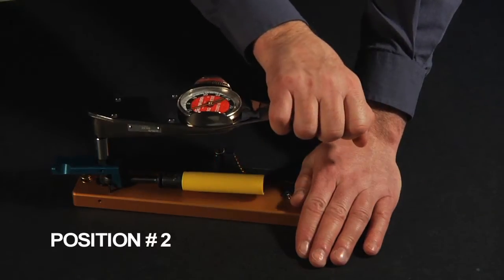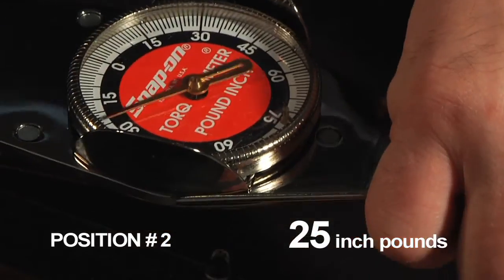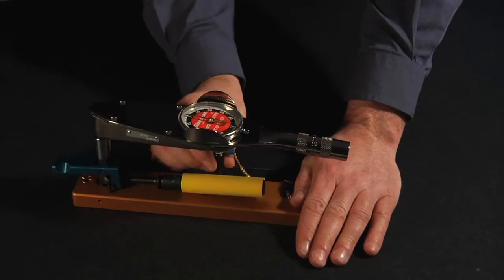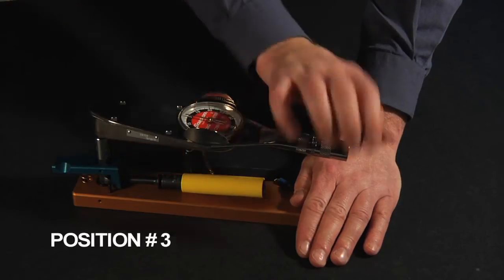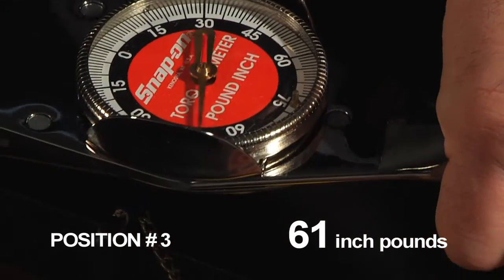When gripped at position two, a torque of 25 inch-pounds is exerted. And when gripped at the third position, a torque of 61 inch-pounds is exerted on the F-connector.